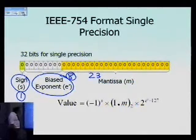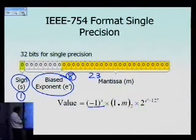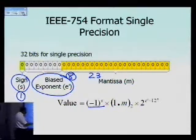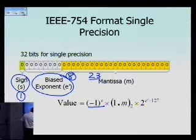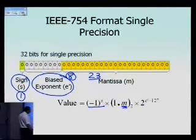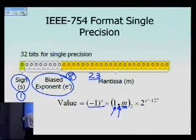The expression minus 1 raised to the power s, where s is the sign bit (either 0 or 1), dictates whether it's a negative or positive number. The mantissa is 23 bits — those 0s and 1s go right here — and before the radix point you see a 1. What does that mean?